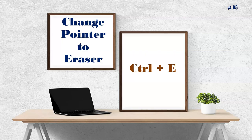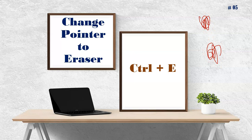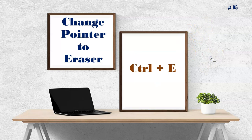The fifth shortcut is changing the pointer to eraser. We already know Ctrl+P is the shortcut for the pen. After writing or drawing annotations on the slide, if you want to erase them, instead of going to the helper menu, use the shortcut Ctrl+E. Once you press Ctrl+E, the pen automatically converts to a rubber eraser, and you can erase whichever parts you don't need.